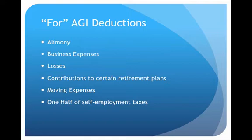Contributions to certain retirement plans are also for AGI deductions. We might contribute to an IRA or a 401(k), and if we do that we're able to deduct that from our taxes — we don't have to pay tax on that amount. This reflects a social objective: they allow us to deduct retirement contributions because it encourages people to save for retirement. Moving expenses and one-half of self-employment taxes are also for AGI deductions, since self-employed persons have to pay double on Social Security and Medicare.